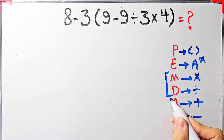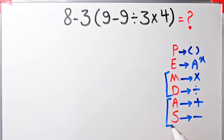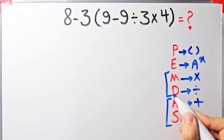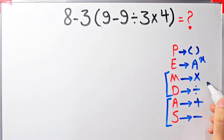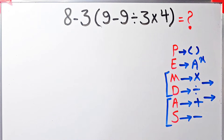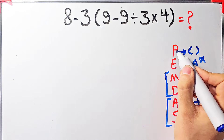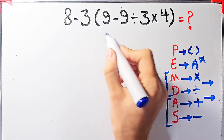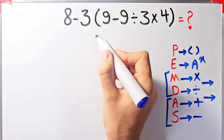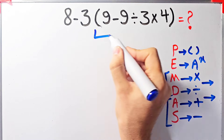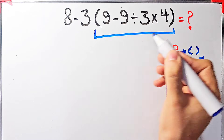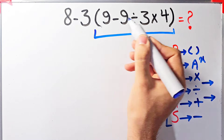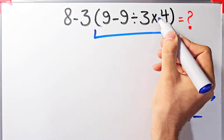Multiplication and division have the same level of priority. Also addition and subtraction have the same level of priority, and when we have both in an expression we start from the left. According to the PEMDAS rule, first we simplify the parenthesis. Inside the parenthesis we have subtraction, division, and multiplication.